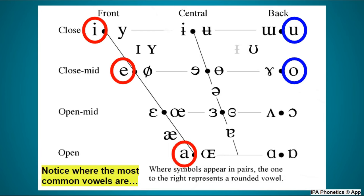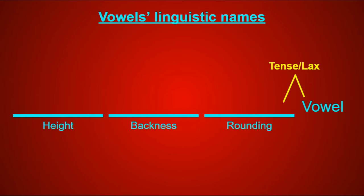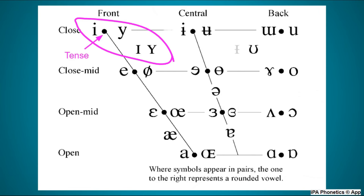In addition to those three attributes, there's also tense versus lax. The difference is in tenseness — whether your tongue goes all the way to the indicated position (tense) or just kind of stays close to the center (lax).